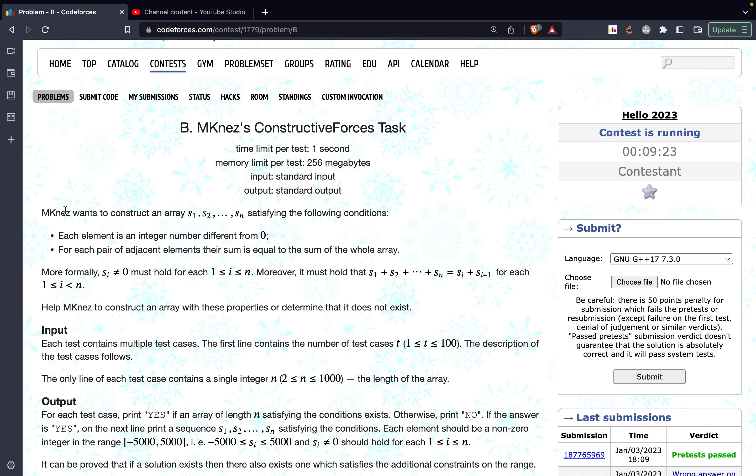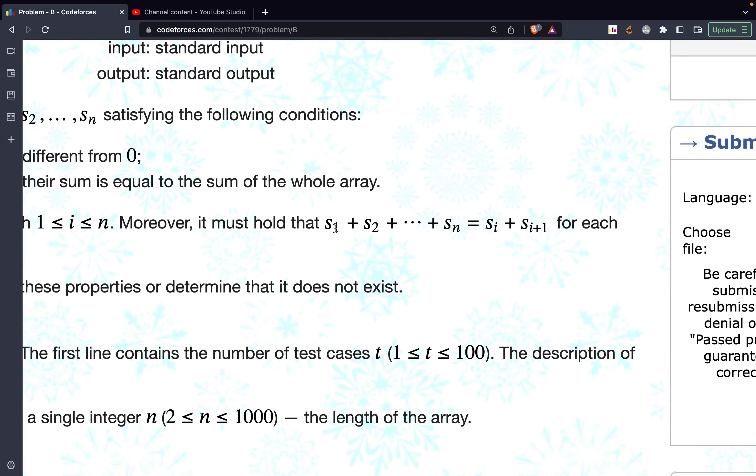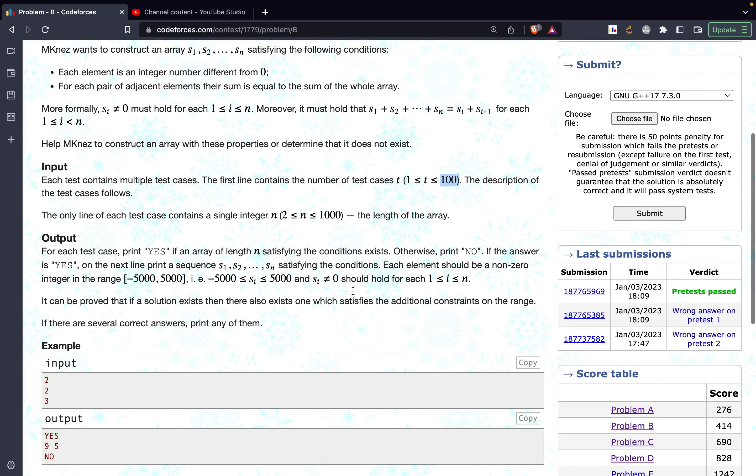Problem B states that person M wants to construct an array S1, S2 up to Sn, satisfying the following condition: each element is an integer number different from 0. For each pair of adjacent elements, the sum is equal to the sum of the entire array. What it basically means is that if we select any element Si, then Si plus Si+1 should be equal to the sum of the entire array. The constraints are n is less than or equal to 1000 and t is less than or equal to 1000.